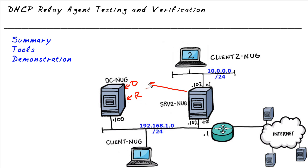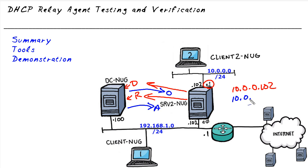It's interesting to note, as a tip: when Server 2 sends the discover and the request over to DC-Nug, because the request is coming off the relay agent on Ethernet 1, it's going to use the source IP address of 10.0.0.102 for those two packets. When the server responds back with the offer and the acknowledgement, DC-Nug is going to send those back to the same address of 10.0.0.102. So the unicast packets will be between 192.168.1.100 and 10.0.0.102.